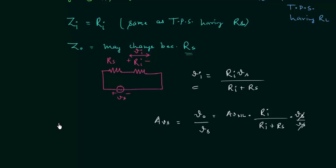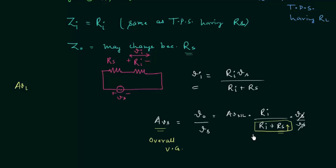We will now analyze how the overall voltage gain AVS is dependent on the source resistance RS. On increasing the source resistance, the denominator RI plus RS will also increase. When the denominator increases and the numerator is fixed, RI divided by RI plus RS will decrease, and because of this AVS will also decrease. So the overall voltage gain AVS is inversely proportional to the source resistance RS.